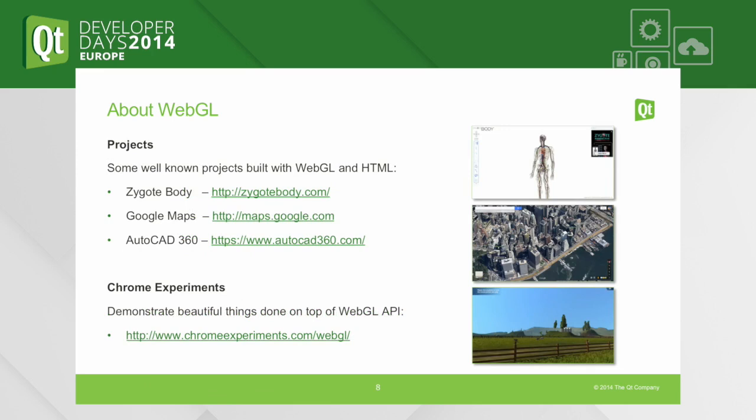So what can be done with WebGL? Here are a couple of examples. Some of you may have heard of the Zygote Body, which is a human body atlas — a fully interactive 3D model where you can scale how deep into the human body you want to go: the skeleton, the blood circulation system. It's fully interactive 3D.